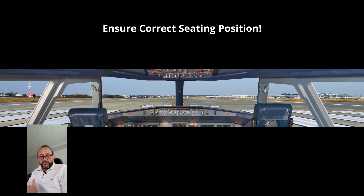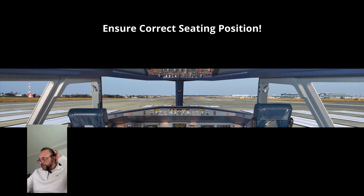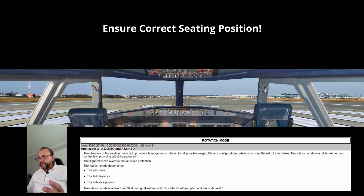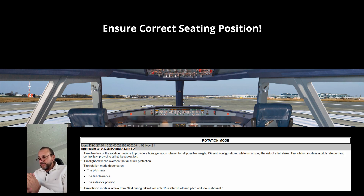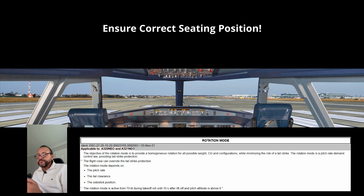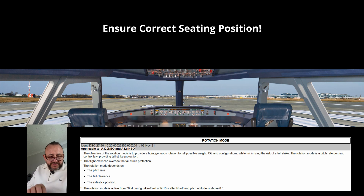The side stick will feel slightly different between a 319 and a 320. The NEO also has a rotation mode — extracted from the FCOM — which enables homogeneous rotation for all possible weights, CG, and configuration. That mode is available until about 10 seconds after takeoff and above 8 degrees pitch. So a NEO will feel different to a CEO, and a 319 will feel different to a 320. Additionally, the aircraft transitions from ground mode through direct law to G-load, so care is needed managing the side stick through those mode transitions.